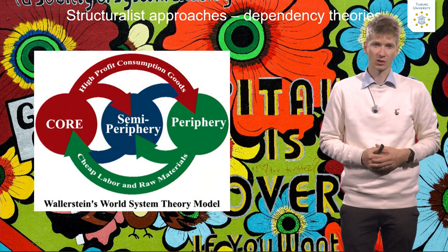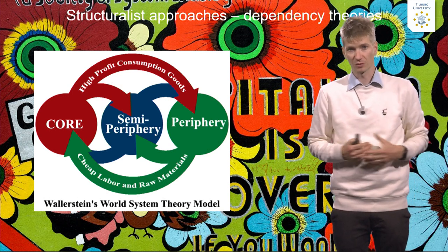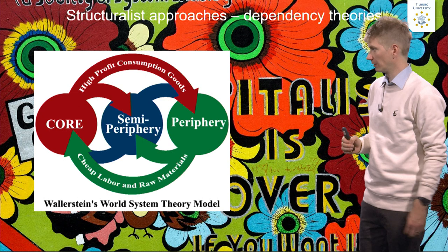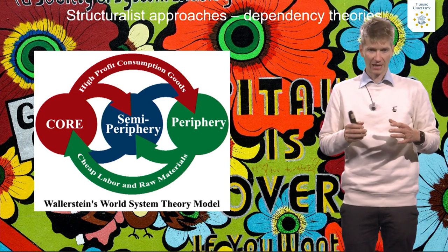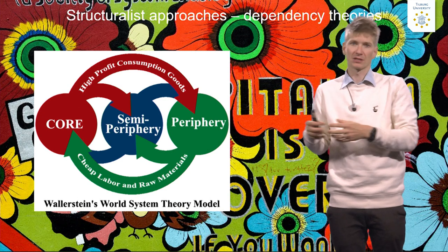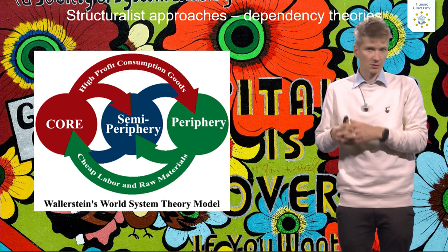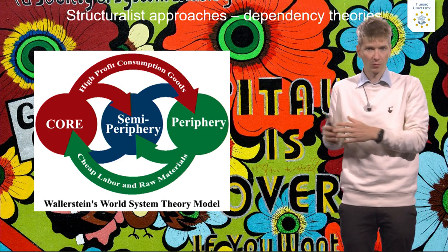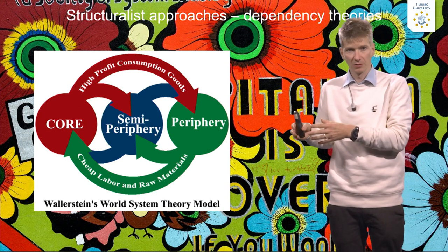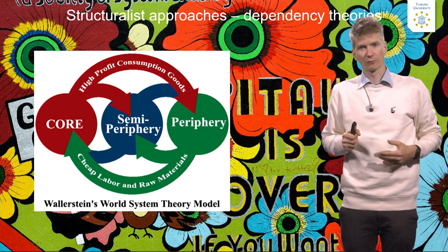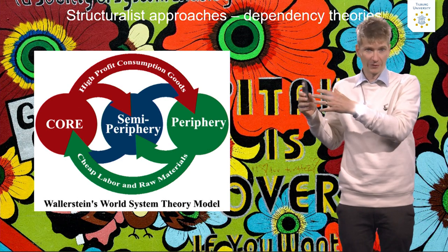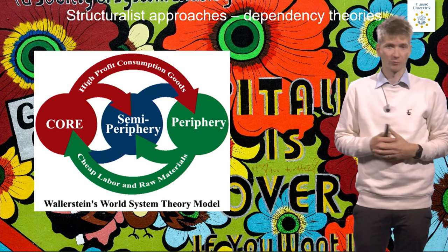Sociologist Immanuel Wallerstein became very famous because of his world systems theory, which you can see here on the slide. Wallerstein indicated that core countries dominate the world economy, while peripheral countries provide raw materials, labor, and consumer markets. Core countries are interested in these raw materials because in a capitalistic economy you want to maximize profit — taking raw materials from peripheral countries at a very cheap price and selling them in the west.